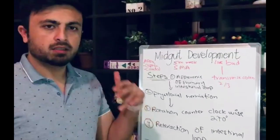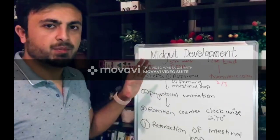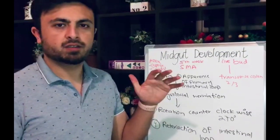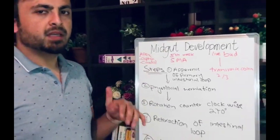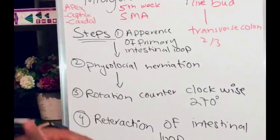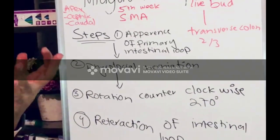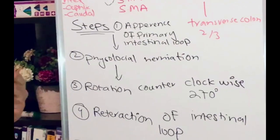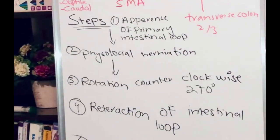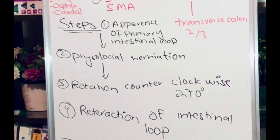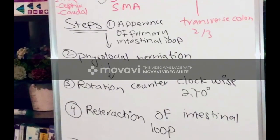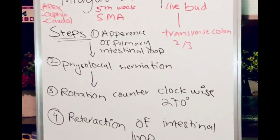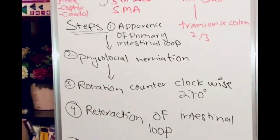To quickly recap: the midgut starts developing at the fifth week, and the blood supply is through the superior mesenteric artery. It extends from the liver bud to the two-thirds of the transverse colon. The first step is the appearance of the primary intestinal loop, which has three regions: apex, cephalic, and caudal. From the apex there is open connection to the yolk sac. From the cephalic end, the jejunum and proximal ileum develop. From the caudal end, the rest of the ileum, appendix, and two-thirds of the transverse colon develop. The second step is physiological herniation — movement of the primary intestinal loop from the abdominal cavity to the extra-embryonic cavity due to shortage of space.